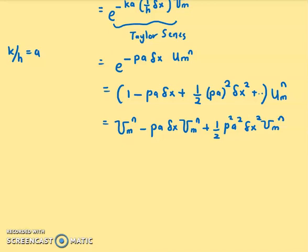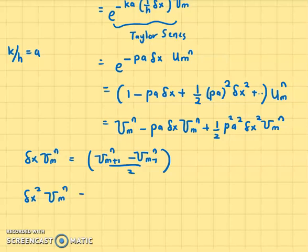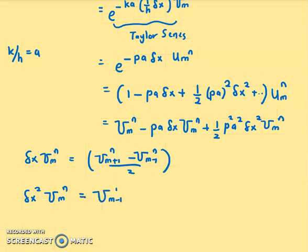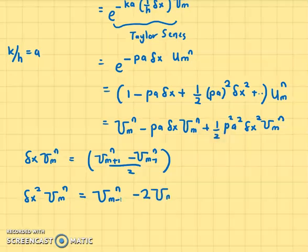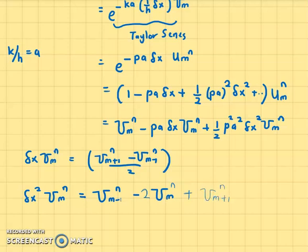Now, recall that delta x u_m^n can be written by the central difference, (u_{m+1}^n - u_{m-1}^n) over 2. And similarly, for delta x squared u_m^n, is given by u_{m-1}^n minus 2 u_m^n plus u_{m+1}^n.